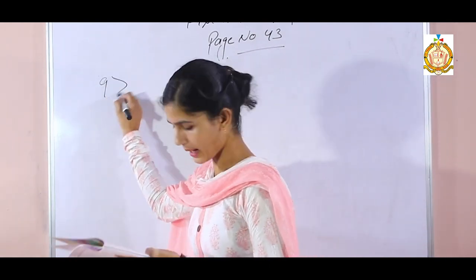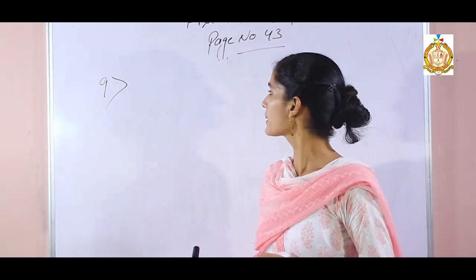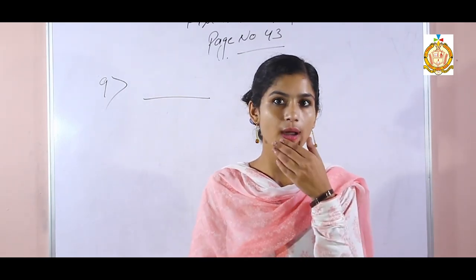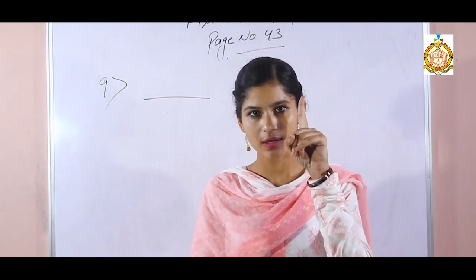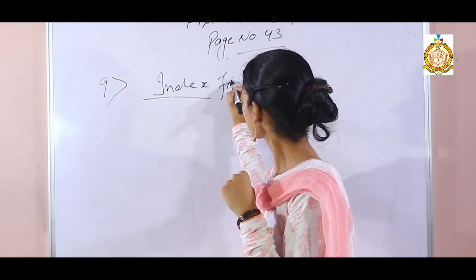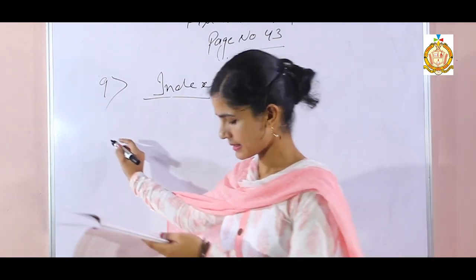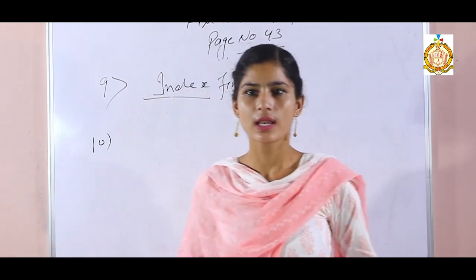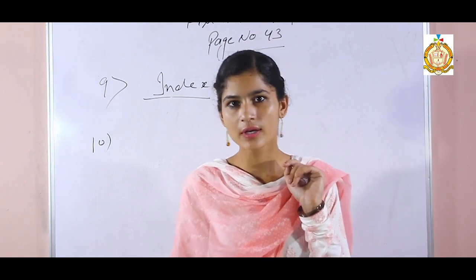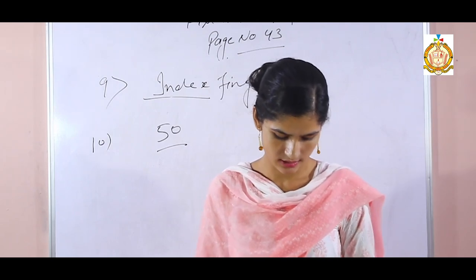Ninth fill-in: we use the dash finger to add and subtract upper beads. Which finger? The index finger. Write: index finger. Tenth fill-in: the value of the left hand thumb. Left hand thumb value is 50. Write: 50.